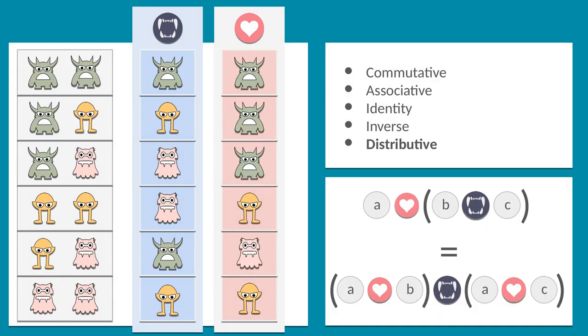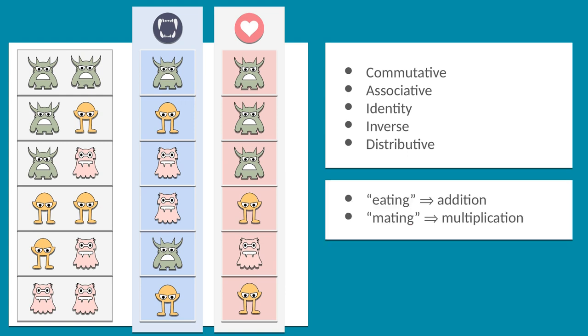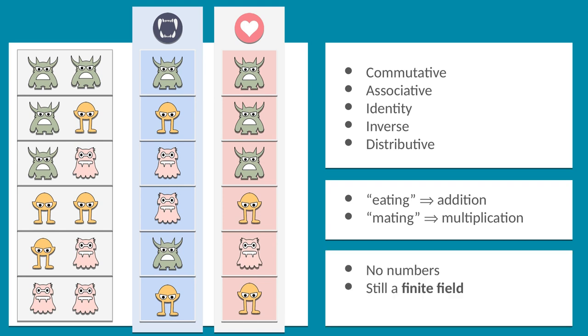Finally, the creatures even follow the distributivity between the eating and mating relations. The researchers that visited the island concluded it had truly been a great field trip. Get it? Field trip? Okay. What this example hopefully makes clear is that while the eating and mating behave like addition and multiplication, the creatures are not at all numbers like we know them, but they still form a finite field. And because they form a finite field, we could abuse these poor creatures to implement Shamir's secret sharing scheme.